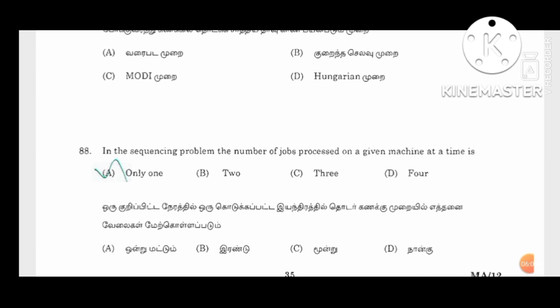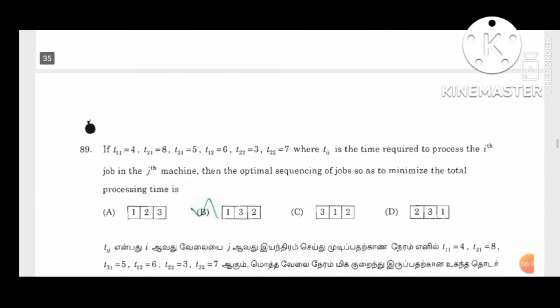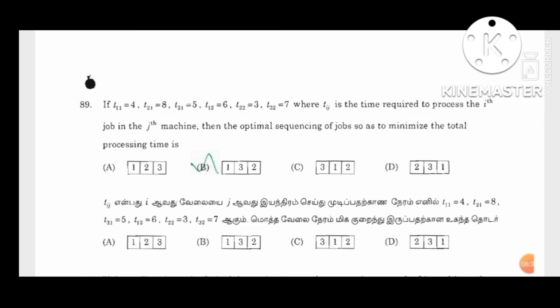In the sequencing problem, the number of jobs processed on a given machine at a time is only one. We can find the optimal solution using T1i and T2j values — the time required to process the i-th job on the j-th machine — to find the optimal sequence that minimizes total processing time.